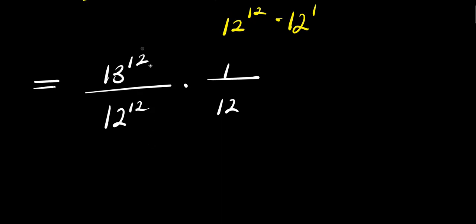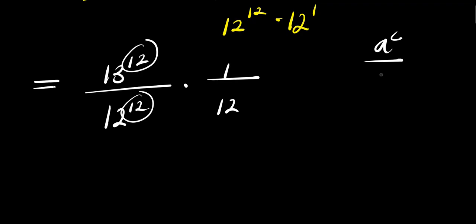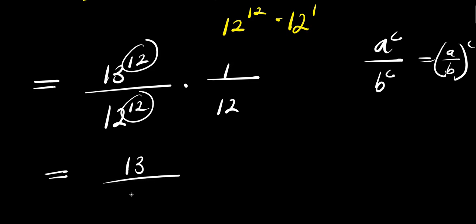Now I observe there is 12 in the numerator base and 12 in the denominator base. So I can apply the identity (a/b)^c = a^c / b^c. That means I am simply going to have (13 divided by 12) to the power of 12, times 1 over 12. This gives us (13/12)^12 times 1/12.